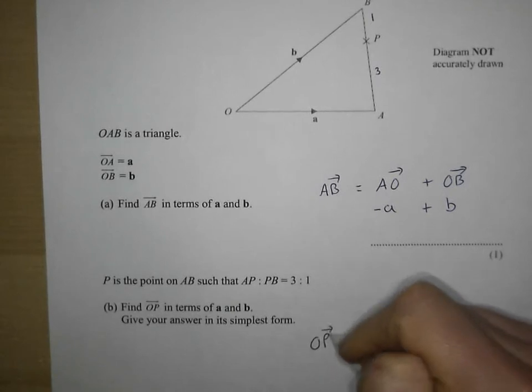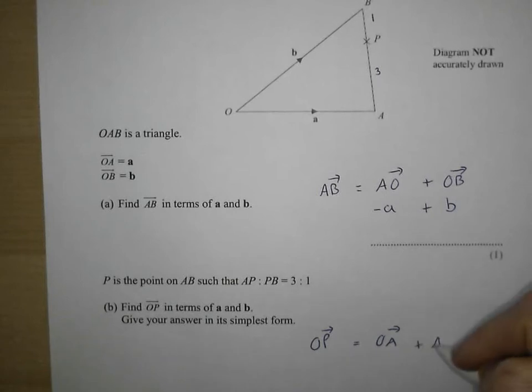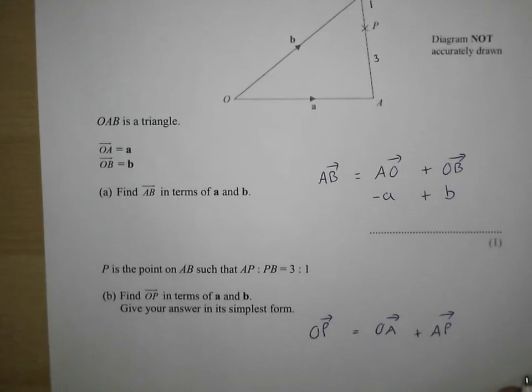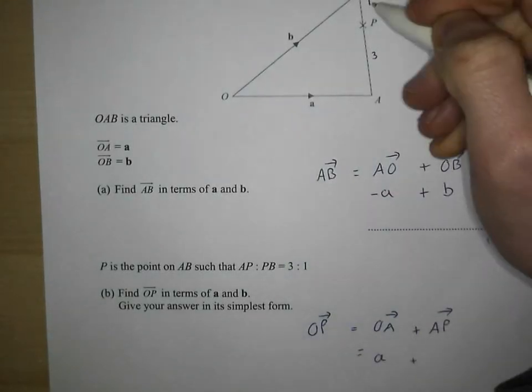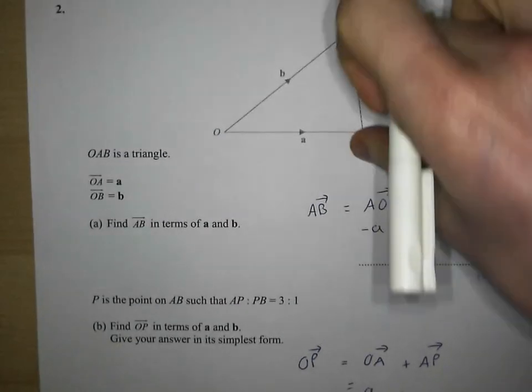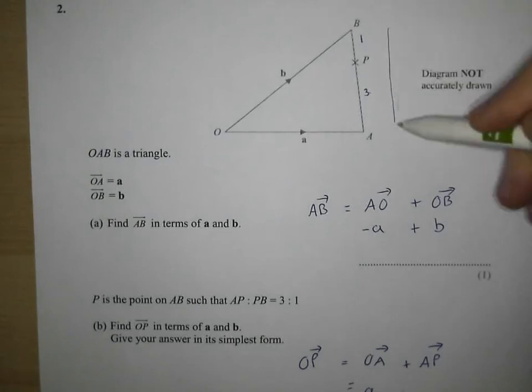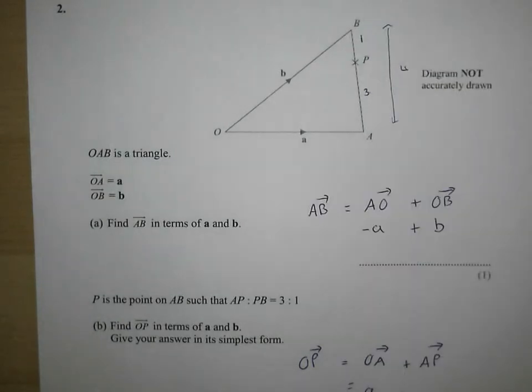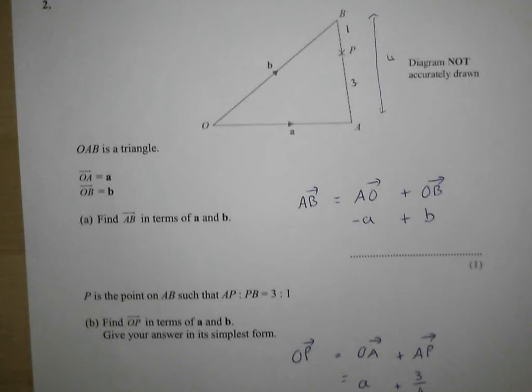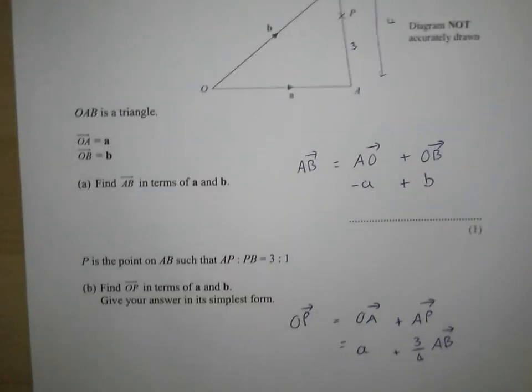To get from O to P, I'm going to first go OA and then when I get to A, I'm going to go AP. Alright, what do I know? Well, OA is just vector a. Nice easy start. AP. How much of AB is AP? Well, if that's three parts and that's one part, the full thing there is four parts and we want to go three parts of the way along. So we want to go three quarters of vector AB. That's all we want to do, three quarters of the way along that line. Alright, let's have a look at that.